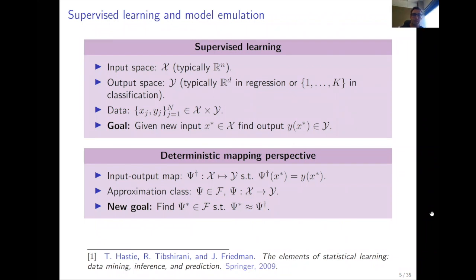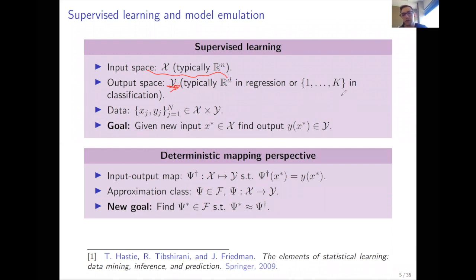The first part combines supervised learning and model emulation. Supervised learning comes from machine learning; model emulation is developed more in statistics and UQ. In the general supervised learning framework, you have some input space X and output space Y — Y is R^d for regression or one of K classes for classification. You have training data as pairs of points (x, y), and your goal is to find the output y at a new input x-star.